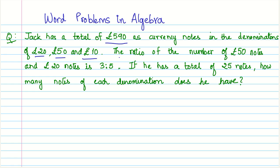Now let us see what it says next. The ratio of the number of £50 notes and £20 notes is 3 to 5. Further, if he has a total of 25 notes, so we know that the sum of number of £20, £50 and £10 notes is 25.